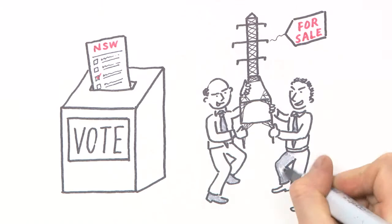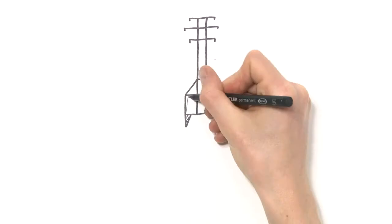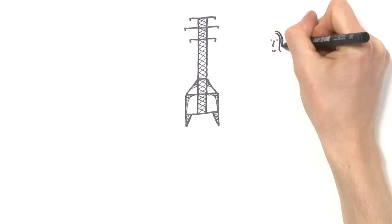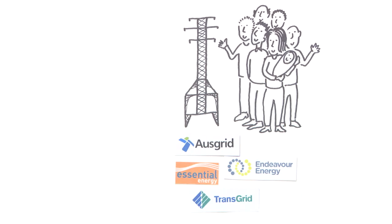One of the big election issues will be whether you support the Liberals and Nationals' plan to privatize the New South Wales electricity network. The poles and wires are a monopoly currently owned by the people of New South Wales. They're operated by the government to benefit everyone.